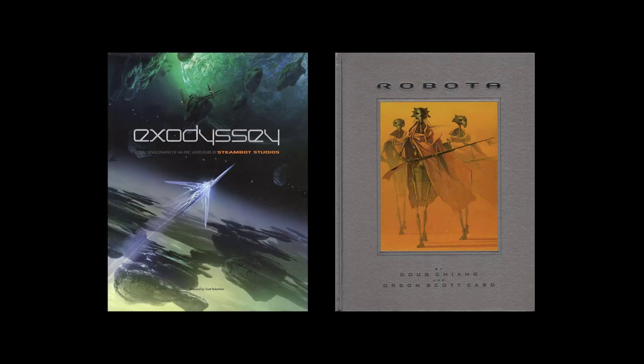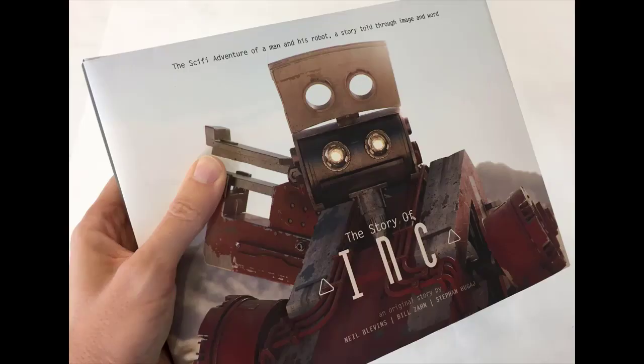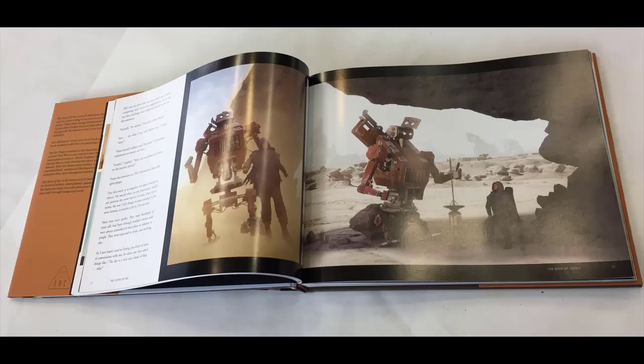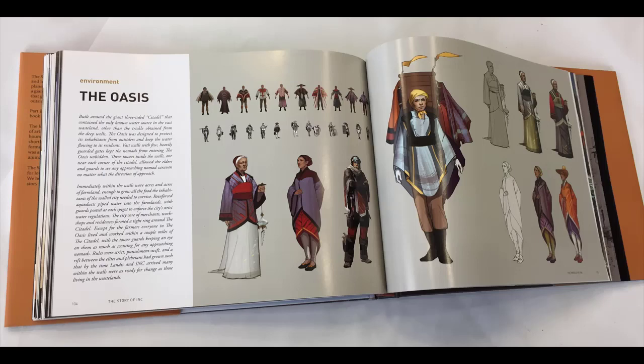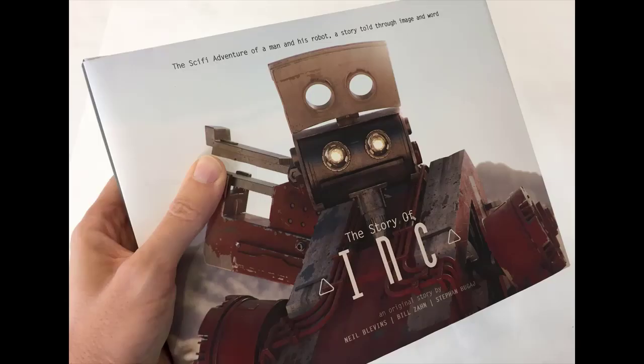Two other favorites of mine are X-Odyssey by SteamBot Studios, published by DSP, and Robota by Doug Chiang. Both were used to pitch films and video game projects, as well as being sold as actual books — though sadly neither has gone beyond their book form. And finally, my narrative art book The Story of Ink, which I made with Bill Zahn, Stefan Bugay, and a bunch of other artists, is basically the same thing. The story portion is formatted like a film script, the first half contains paintings of all the key moments, and the back has design paintings of all the characters and the world. The book is published and enjoyed by fans, while at the same time being shopped around Hollywood as part of the pitch.